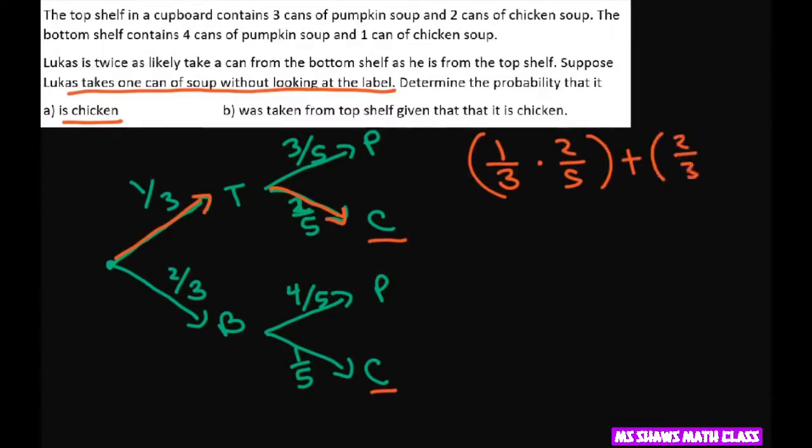be from the bottom times the chicken part. So this gives you two-fifteenths plus two-fifteenths, which equals four-fifteenths, and that's your